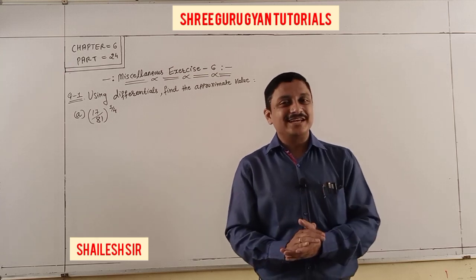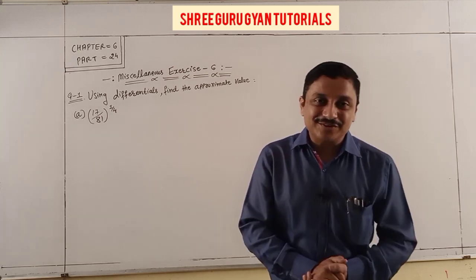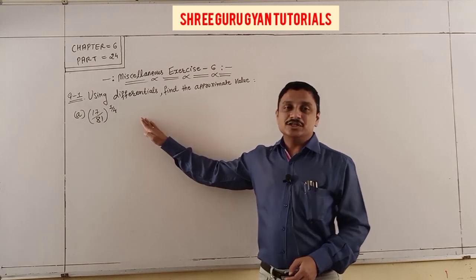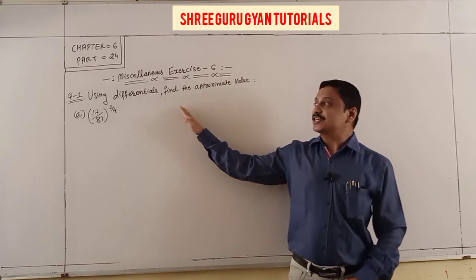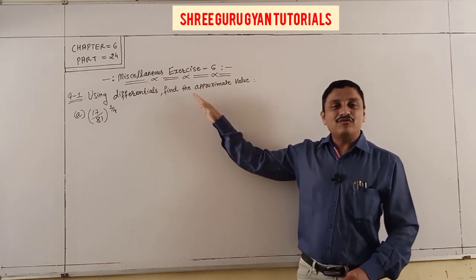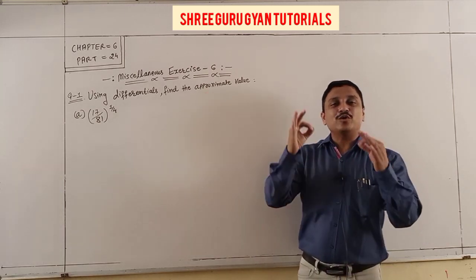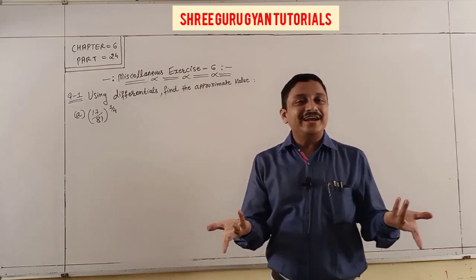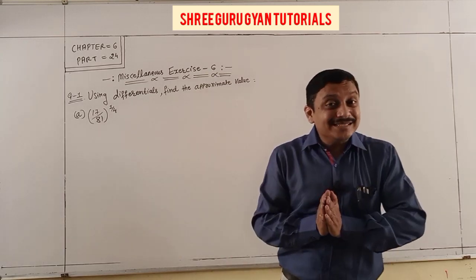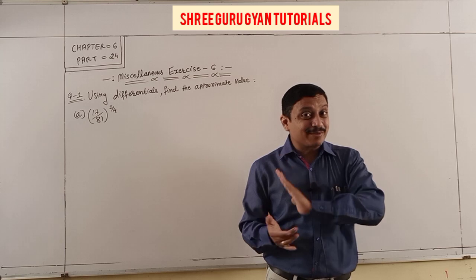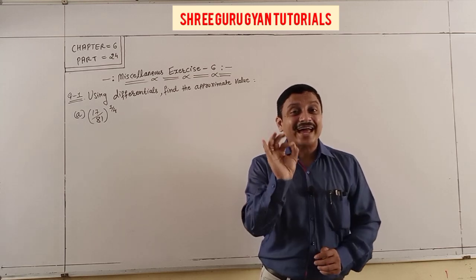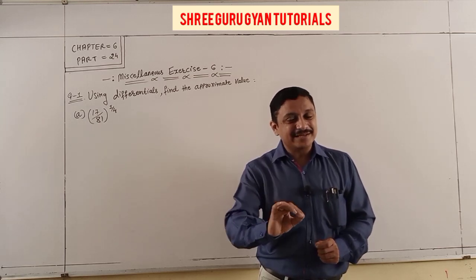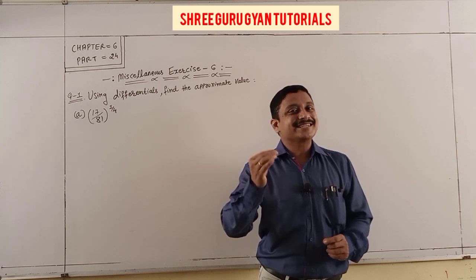Indirectly this will revise our chapter. For the first question, using differentiation as a derivative, find the approximate value of (17/81)^(1/4). Approximate value means Exercise 6.4 related: f(x + Δx) ≈ f(x) + f'(x)·Δx.